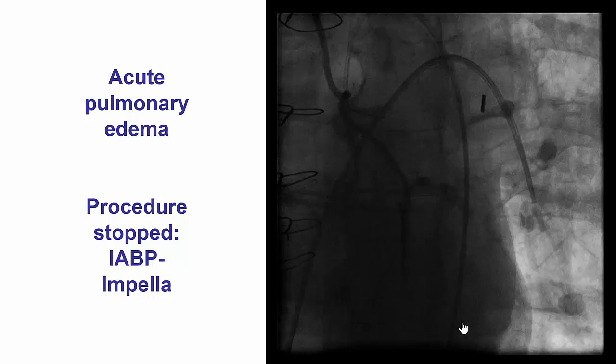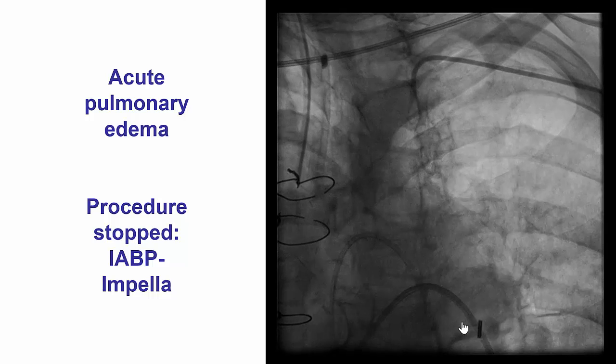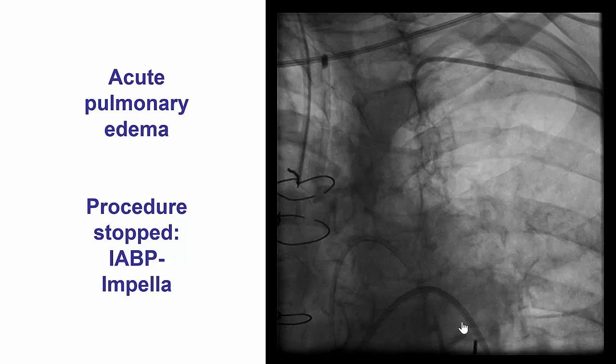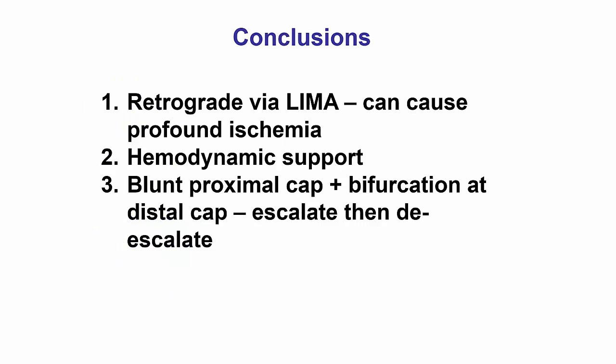The cause of the decompensation is unclear. However, echo did show new onset mitral regurgitation that subsequently resolved, suggesting ischemic etiology. This case provides several important lessons. The first is that retrograde crossing using a left internal mammary artery graft can cause profound ischemia, presumably by straightening the tortuosity of the LIMA graft with the wires and microcatheters advanced through it, which was likely the mechanism causing ischemia, mitral regurgitation, and pulmonary edema in this patient.